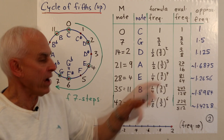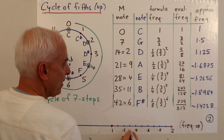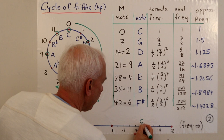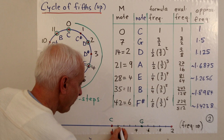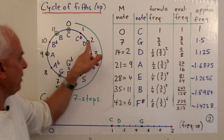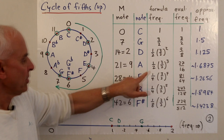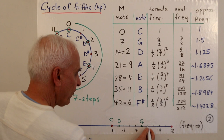So G is at 3/2 = 1.5 on our frequency scale, and D is at 9/8 = 1.125. For A we multiply again by 3/2 to get 27/16, which is approximately 1.6875 — somewhere around there on the scale. These are the frequency positions we're plotting for each note.